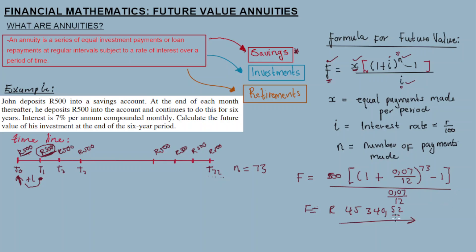So F is about 45,343.52 rand. We quote to two decimal places to show the cents after the decimal. Money is always quoted in two decimal places. This is our answer and this is how you use the future value formula. Check out the description box — there is also a video discussing different compounding periods, including monthly, quarterly, and half-yearly. Thanks for tuning in!